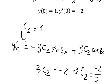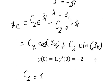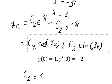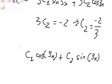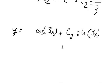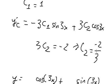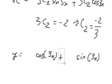After finding c1 and c2, we go back to the equation and substitute the values. c1 is 1, and c2 is negative 2 over 3. Now we have the final answer. This is the final answer.